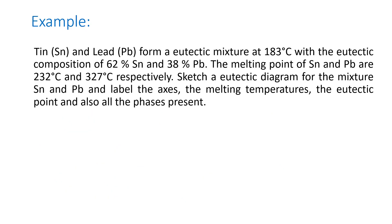As an example, tin and lead form a eutectic mixture at 183 degrees C, with the eutectic composition of 62% tin and 38% lead. The melting point of tin and lead are 232 degrees C and 327 degrees C, respectively. The task is to sketch a eutectic diagram for the mixture of tin and lead, labeling the axes, melting temperatures, eutectic point, and all phases present.